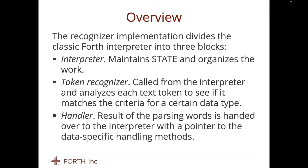I credit Matthias for this — I'm quoting him from his original proposal almost verbatim. The interpreter part is the part that runs on the outside; it maintains state and organizes the work. State is a system variable that contains a zero if you are interpreting or a minus one if you are compiling. The token recognizer is called from the interpreter loop, and it analyzes each text token to see if it matches the criteria for a certain data type. In the classic Forth interpreter, that was just a simple test: is it in the dictionary, is it a number? No — abort. The handler takes the result of the parsing words and passes it to the interpreter with a pointer to data-specific handling methods.